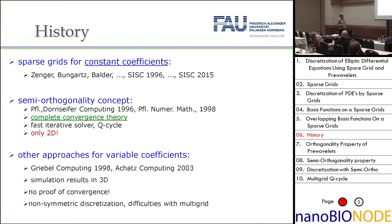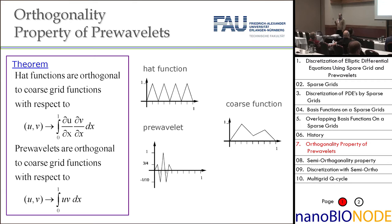My talk is about exactly this question: how can we handle sparse grids with variable coefficients? The answer is you should use pre-wavelets. If you do that, then everything is fine. A very simple answer.